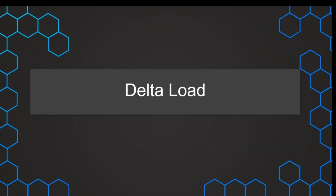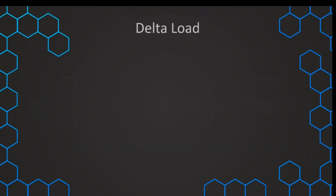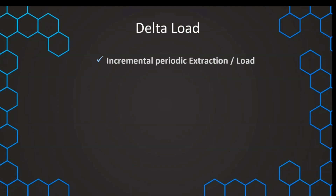Now that we have understood the initial load, we want to step things up and understand how, once we have loaded all of that data in the initial load, we can now also implement the so-called delta load. The delta load is this process where we are now incrementally loading the data, and we do this on a regular basis — maybe once per day, maybe every night. We load the new data from the source system that we have not loaded before, bringing it first into the staging layer and then into the core layer. This is why we need to always have a delta column for every table in our data warehouse.